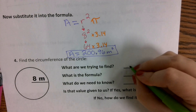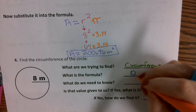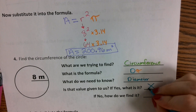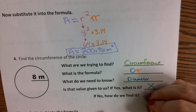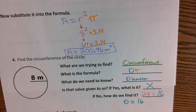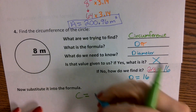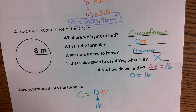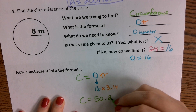For the last one, we're solving for circumference. The formula for circumference is diameter times pi, so we need to know what the diameter is. Do they give us the diameter? No — they give us the radius, so we need to solve for it. We take the radius and multiply it by 2: 2 times 8 comes out to 16. Our diameter is 16. Now we plug it in — circumference equals diameter times pi, so 16 times 3.14 gives us 50.24 meters.